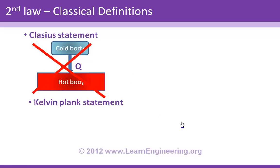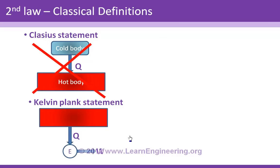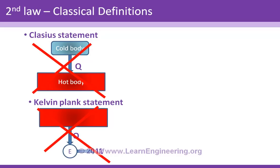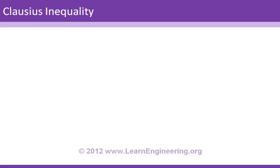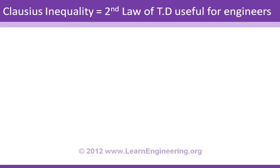The second is the Kelvin-Planck statement: consider an engine absorbing heat from a heat reservoir and producing an equal amount of work — wasting no heat at all. According to the Kelvin-Planck statement, such an engine is impossible. These two classical statements are true and equivalent, but the problem is they are not in a form directly useful for engineers. So we will use one more statement derived from the Kelvin-Planck statement — the Clausius inequality — which is useful for engineers.